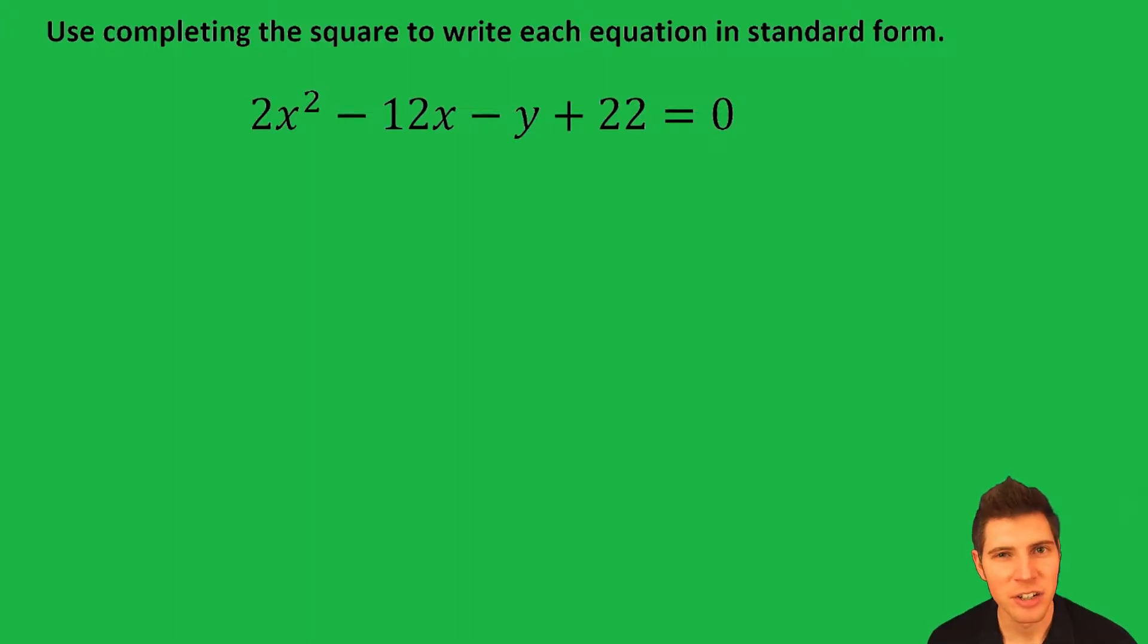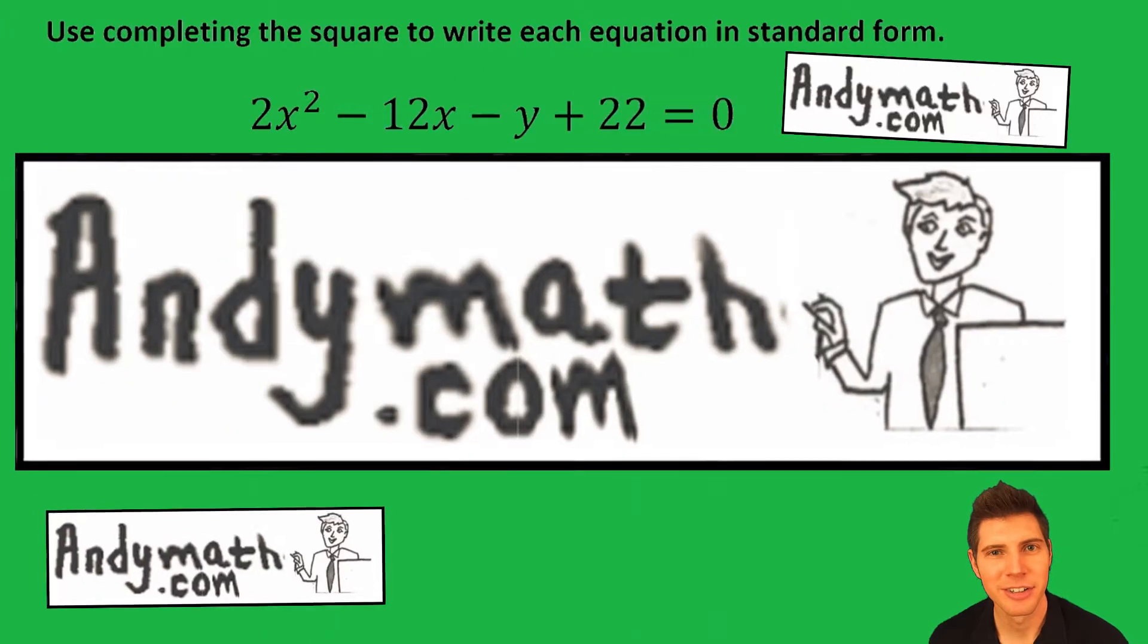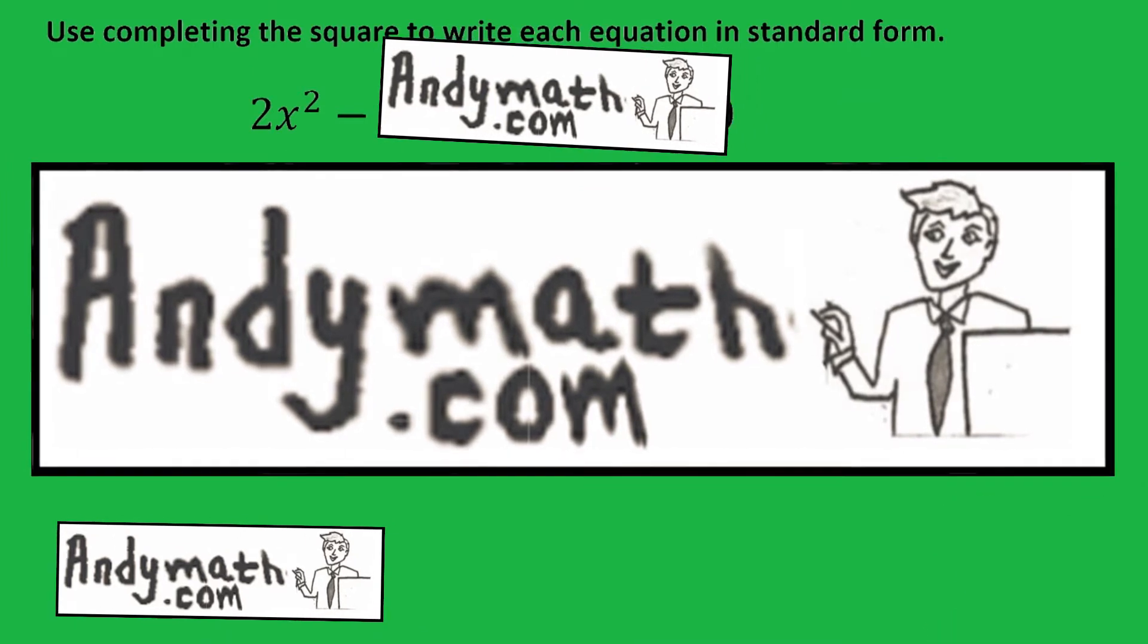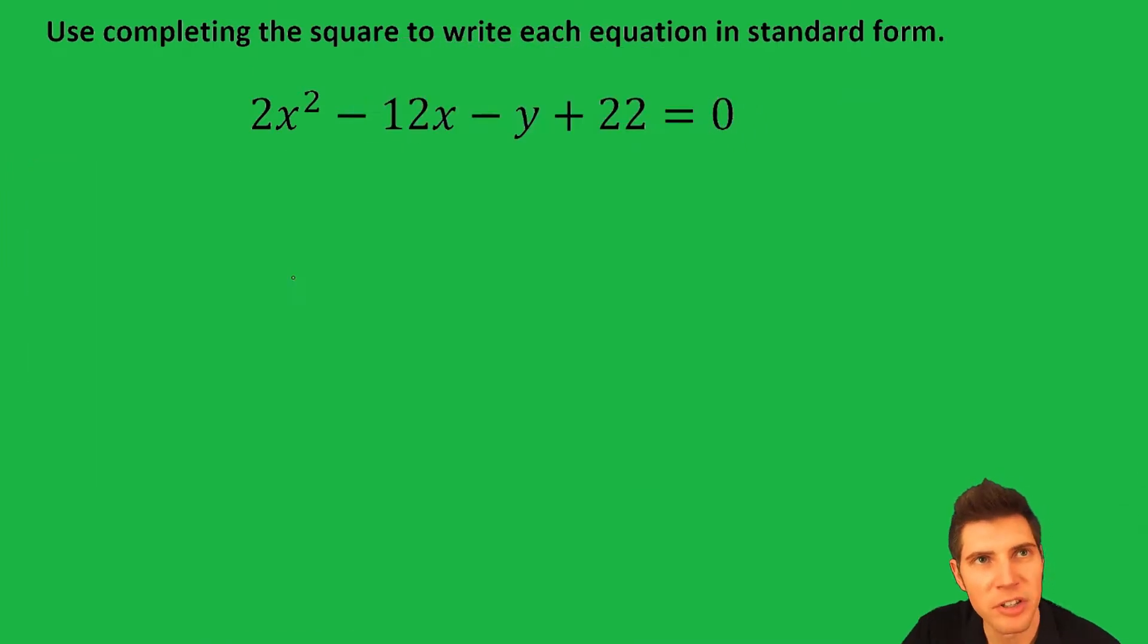Hey guys, welcome to this conic section completing the square video. They want us to use completing the square to write each equation in standard form. First thing you want to do is separate the X's and the Y's, so it's gonna be 2x² - 12x, and we'll have a -y. I like to bring the number over to the other side.